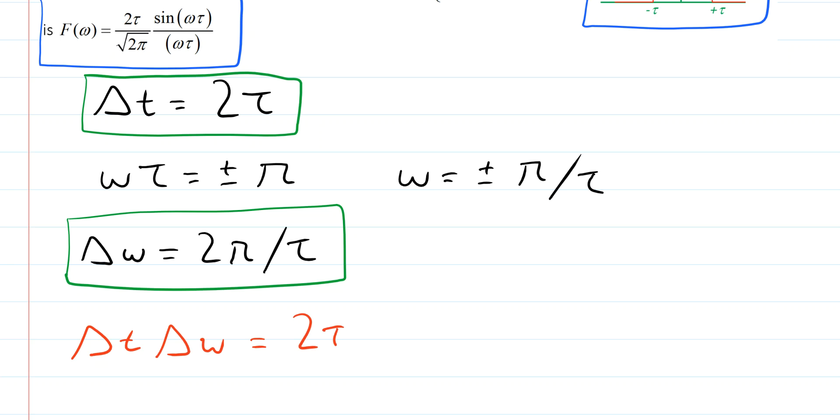That's equal to 2 tau multiplied by 2 pi over tau. We see that we get the result a value equal to 4 pi which is independent of tau. And this is just simply another way of saying that the two widths are inversely proportional to each other.